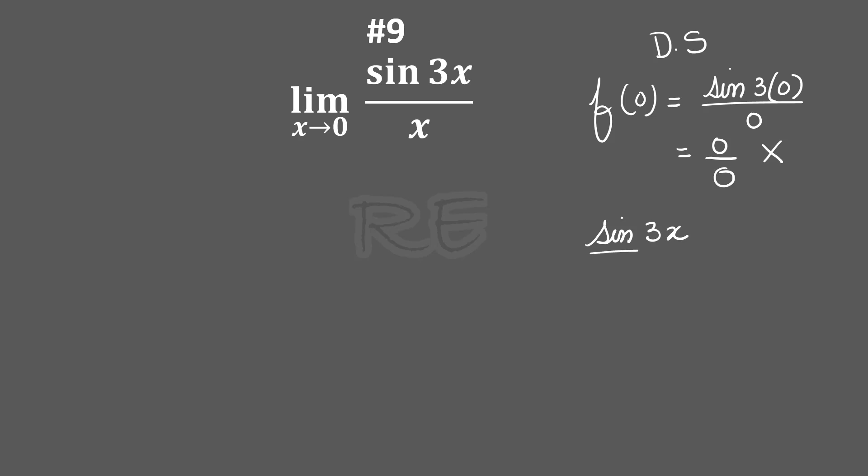Let's try to manipulate the function. Sine 3x over x will be multiplied by 1, which is 3 over 3. We will multiply it by sine and combine the denominators, 3 times x. The limit of a product is equal to the product of the limits.